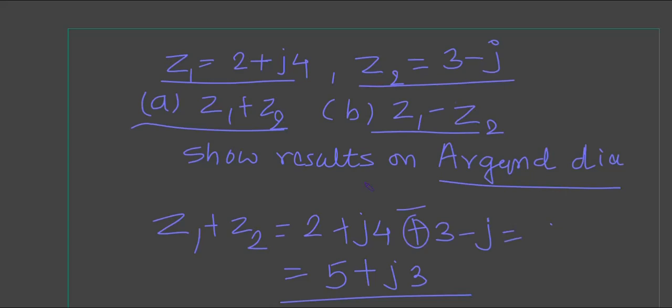What will be the result for z1-z2? It will be -1 and the j part will be +j5. Now again, you have to plot this on the Argand diagram.